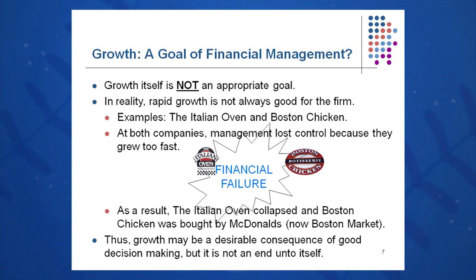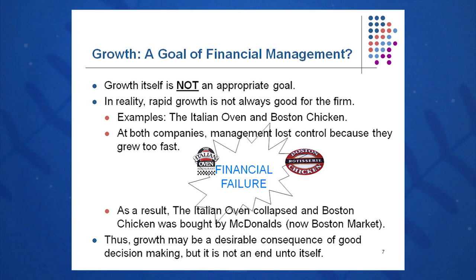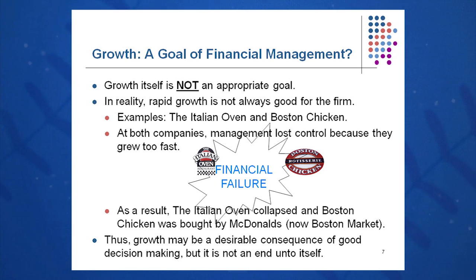Examples of overzealous growth include Italian Oven and Boston Chicken. You may see a few of them still in small towns, but they're not as pervasive as they used to be. Both basically grew too fast, did not calculate their internal growth rate and sustainable growth rate. Management lost control — too much growth led to financial failure. Italian Oven collapsed; Boston Chicken was bought by McDonald's and is now Boston Market. Starbucks also had issues putting a location on every corner in big cities — that just doesn't work. Growth may be a desirable consequence of good decision-making, but it's not an end in itself.